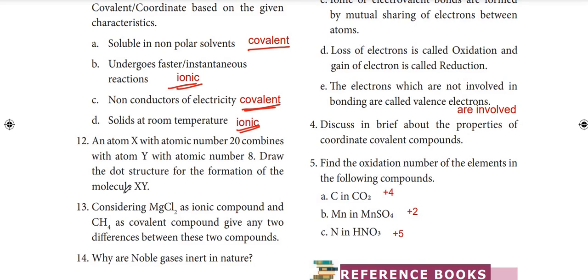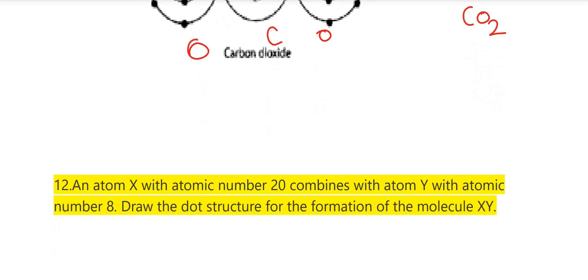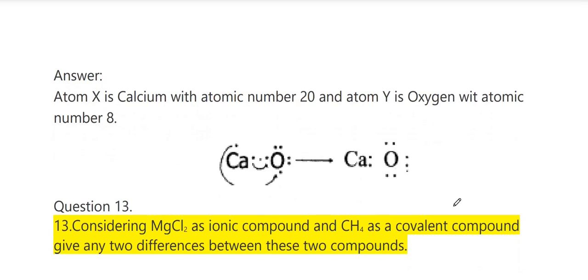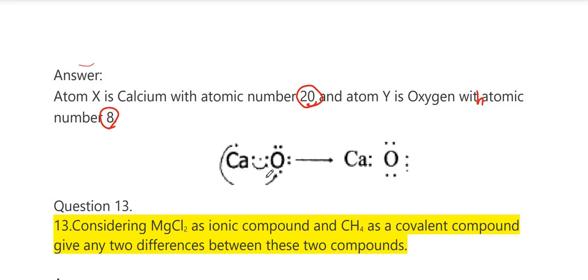Twelfth question: atom X with atomic number 20 combines with atom Y with atomic number 8 — draw the dot structure for the formation of molecule XY. Atom X is calcium (atomic number 20) and atom Y is oxygen (atomic number 8). When combined, there is electron transfer from calcium to oxygen, forming CaO.